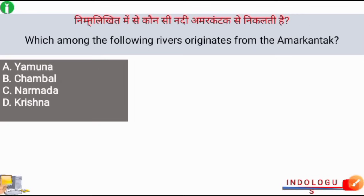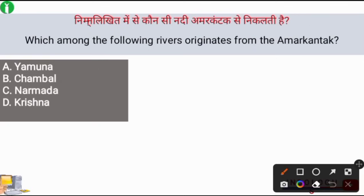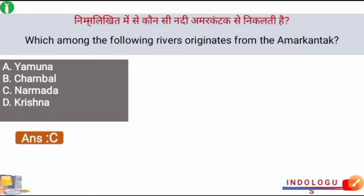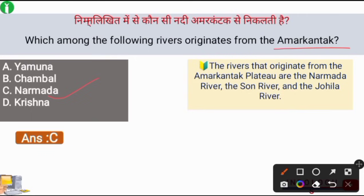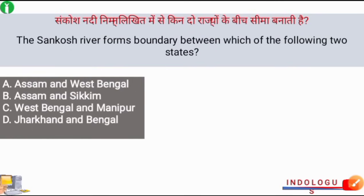Next question: Which river originates from Amarkantak? The right answer is option C, the Narmada River. The source of the Narmada River is the Amarkantak plateau. The rivers that originate from the Amarkantak plateau are the Narmada River, the Son River, and the Johila River.